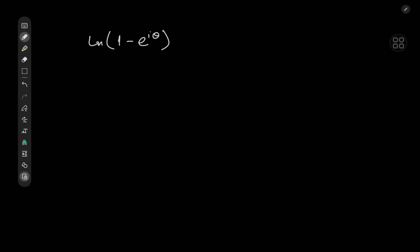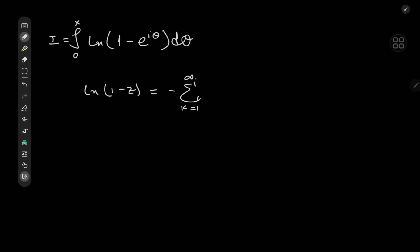Since I like integrals, I'm going to integrate this thing from 0 to x with respect to θ and call it I. The logarithm has a really cool series expansion: log(1 − z) equals negative sum over k from 1 to infinity of z^k divided by k.